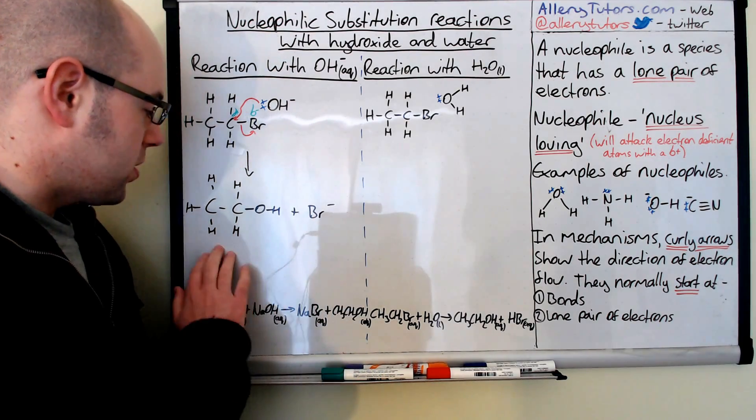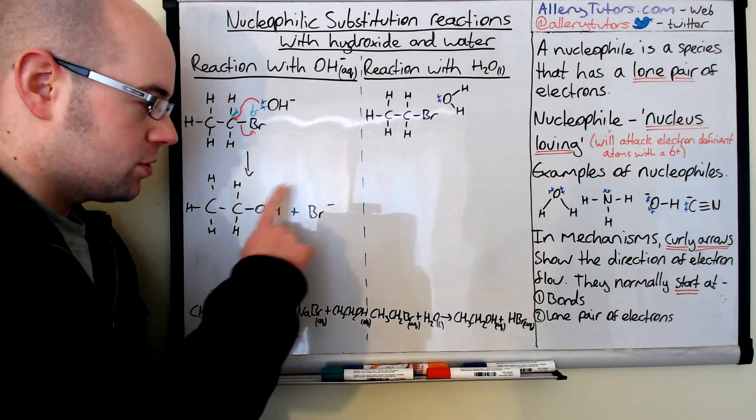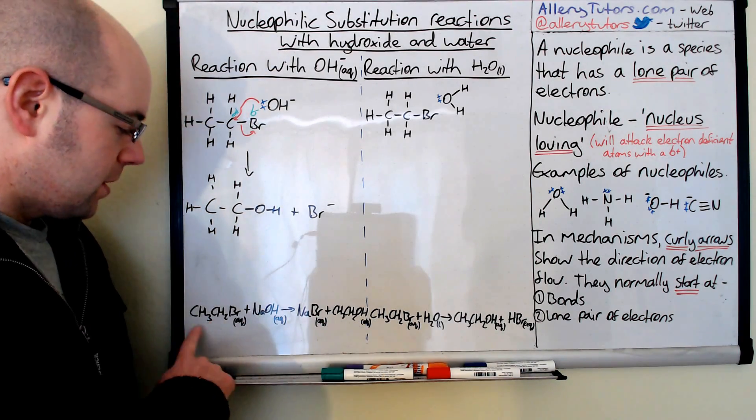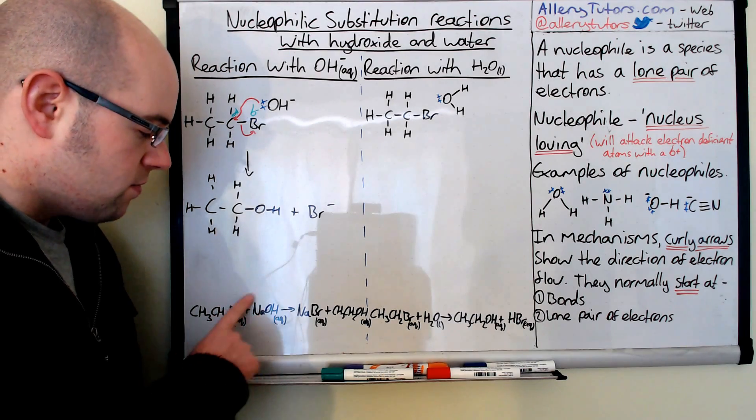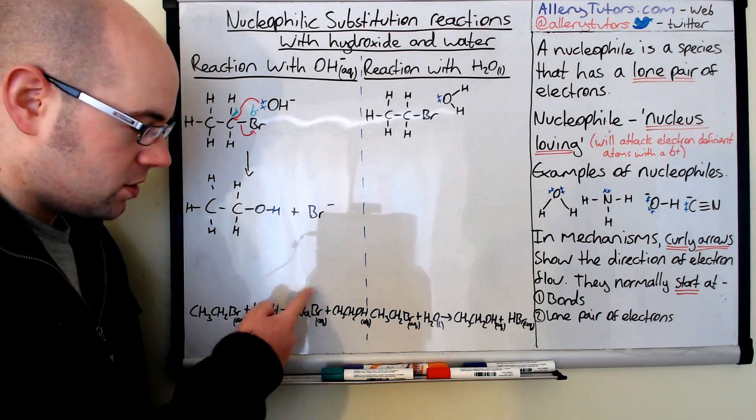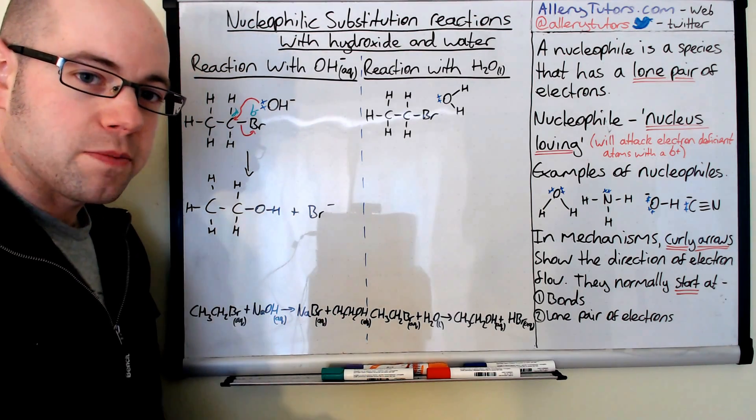So there's our product. You can see we form ethanol, which is our product there, plus our bromide ion. Now I've written down the full equation here to show you what's happening. There's our bromoethane reacting with sodium hydroxide. It'll form sodium bromide, which is our salt that will be floating around in here, and then you've formed ethanol as a product.